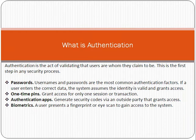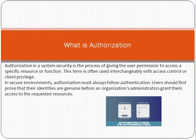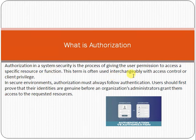Now, authorization. Authorization in system security is the process of giving the user permission to access a specific resource or function. This term is often used interchangeably with access control or client privilege. In secure environments, authorization must always follow authentication — users should first prove that their identities are genuine before an organization grants them access to the requested resources.